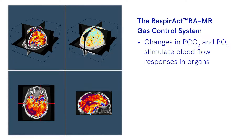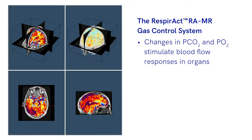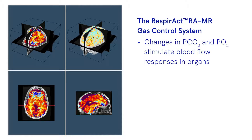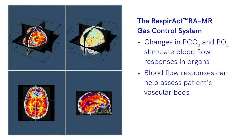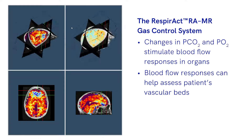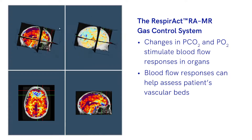Changing the partial pressure of carbon dioxide and oxygen in the blood is done to stimulate blood flow responses in organs such as the brain and heart. Monitoring the changes in blood flow allows for investigation into the subject's vascular health in conjunction with imaging techniques such as magnetic resonance imaging.